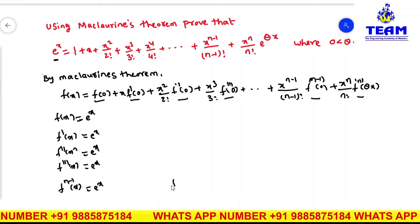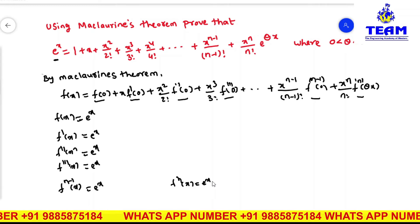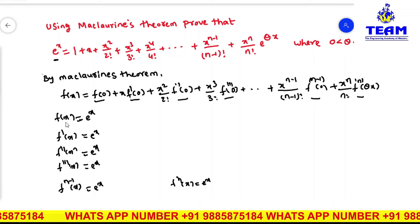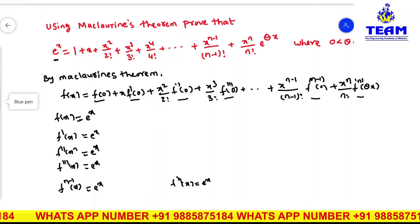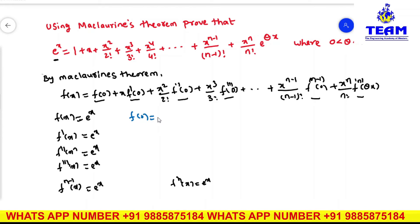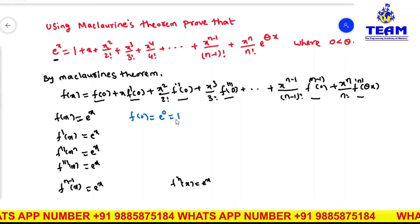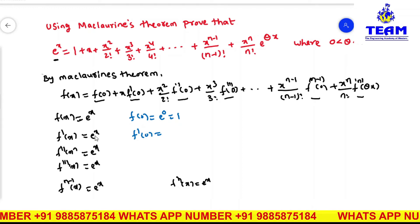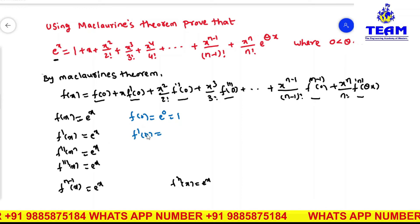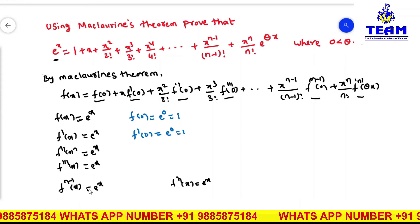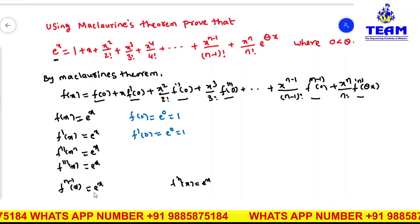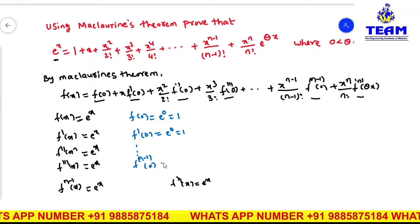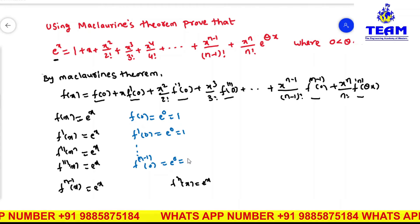So f^n(x) = e^x. Now I require f(0): substituting x = 0, f(0) = e^0 = 1. Similarly, f'(0): since f'(x) = e^x, substituting x = 0 gives e^0 = 1. Similarly, the (n-1)th derivative at x = 0 is also e^0 = 1 only.